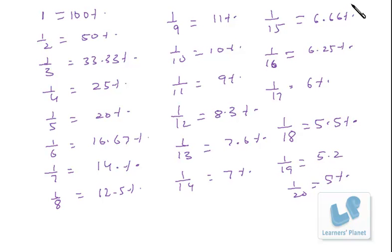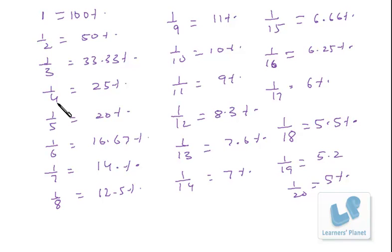Now, if you are given any numerator other than 1, you can use these base values. For example, to calculate 2/3, since you know 1/3, just double it — that is 66.67%. Similarly, if 1/4 is 25%, then 3/4 is 75%. If 1/5 is 20%, then 2/5 is 40%. The calculation will be on your fingertips.